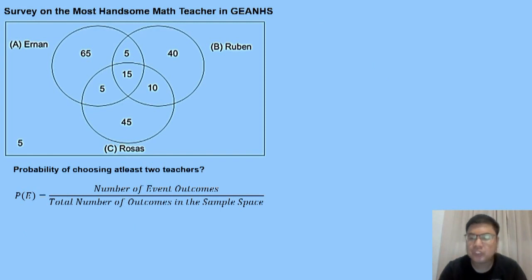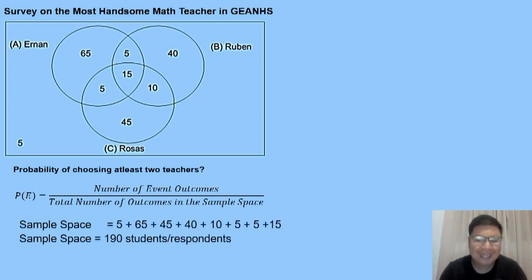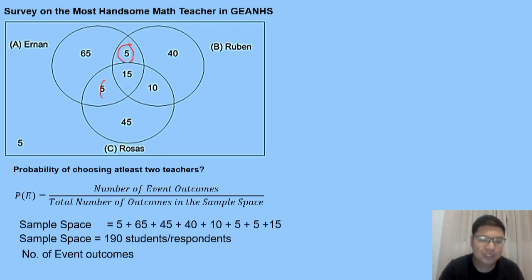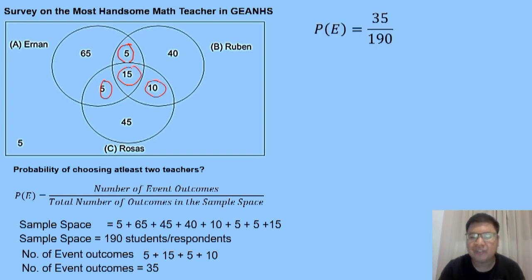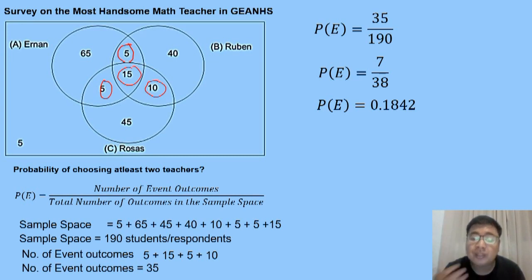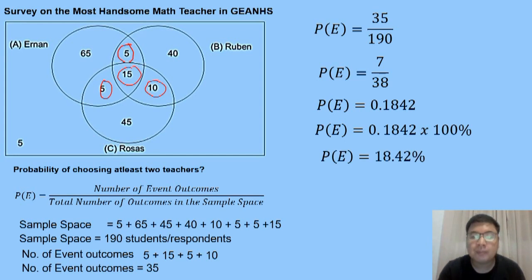Next: probability of choosing at least two teachers. 'At least two' means two or more — could be two or all three. Using the same formula with sample space 190, we take the intersection values: 5 (Ernan & Ruben) plus 5 (Ernan & Rosas) plus 10 (Ruben & Rosas) plus 15 (all three) equals 35. So 35 over 190, lowest term is 7 over 38, equals 0.1842 or 18.42%.